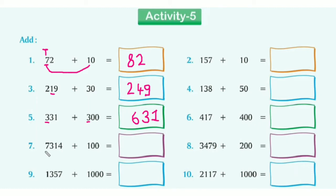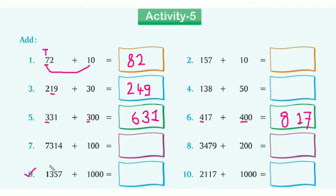Next example: 417 plus 400. We need to add the hundreds. In 417, 4 is standing at the hundreds place, and in 400, 4 is also at the hundreds place. We keep the other digits the same and add only hundreds: 400 plus 400 equals 800. So 817 is our answer.